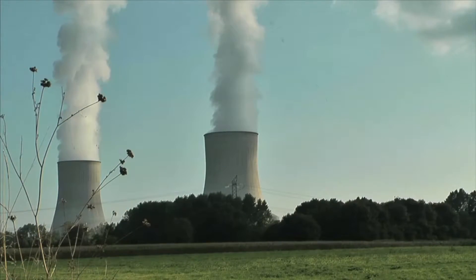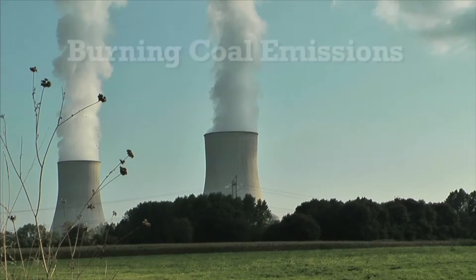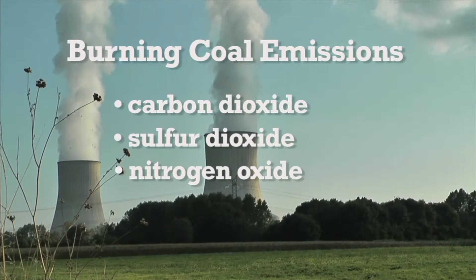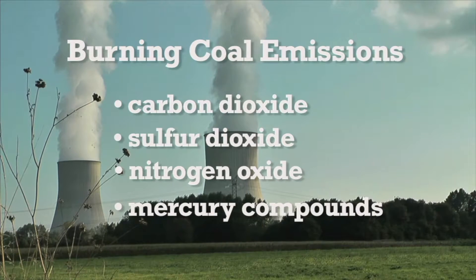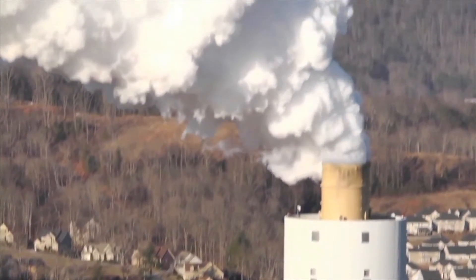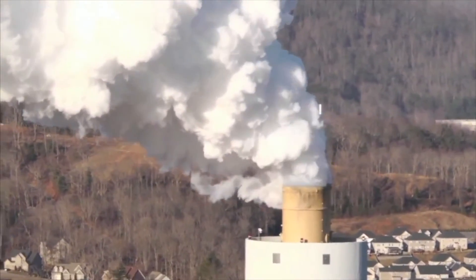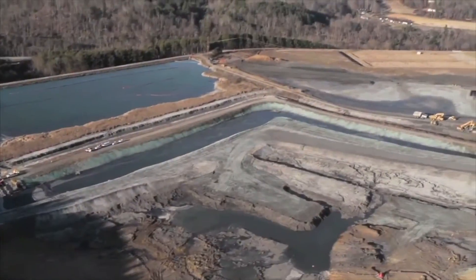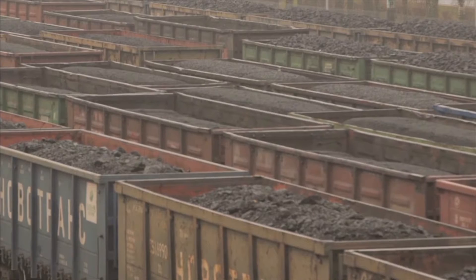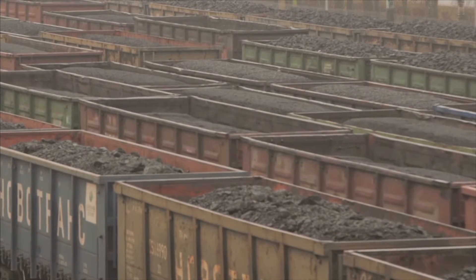Coal mining and the subsequent burning of coal can have many negative effects on both humans and the environment. The burning of coal emits carbon dioxide, sulfur dioxide, nitrogen oxide, and mercury compounds that pollute the air. The mining and burning of coal typically requires the use of water, and pollutants build up in the water used, contaminating bodies of water. Land resources are affected by coal mining and processing too. Surface mining disturbs large areas of land, while the soil at coal-fired power plant sites can also become contaminated with various pollutants from the coal.